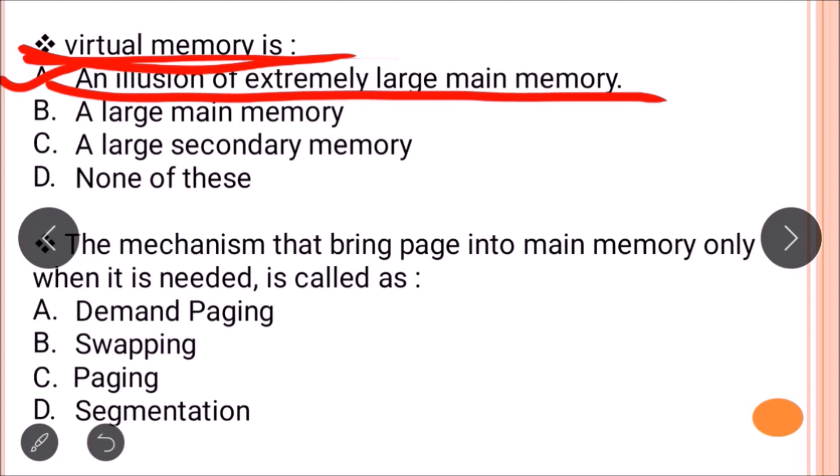The next question is: what is the mechanism that brings a page into main memory only when it is needed? When some pages of a process are in main memory and others are in virtual memory (hard disk), the system generates a demand for those pages when they are needed and brings them from secondary memory into main memory. This mechanism is called demand paging. The correct answer is option A: demand paging.